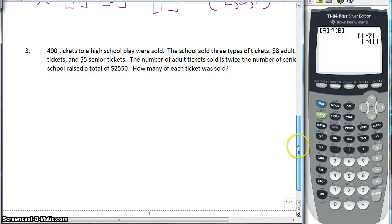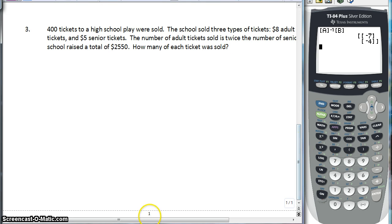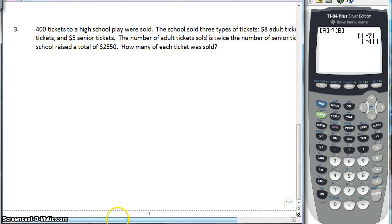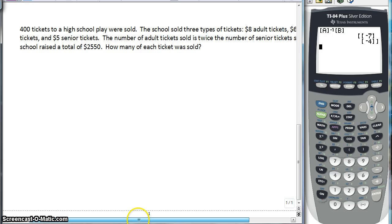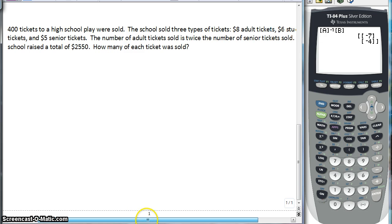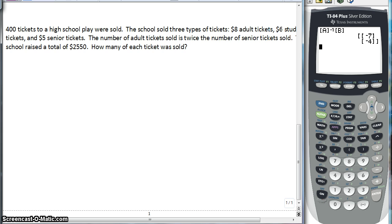So last one is a word problem. And we have tickets to go to a high school play. And all you're going to have to do is write the equation and use inverse matrices to solve. So you have 400 tickets to a high school play. Three types of tickets are sold - $8 adult tickets, $6 student tickets, and $5 senior tickets. The number of adult tickets sold is twice the number of senior tickets sold. And the school raised a total of $2,550. How many of each ticket was sold?